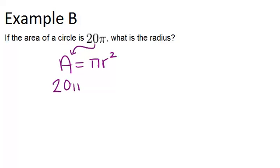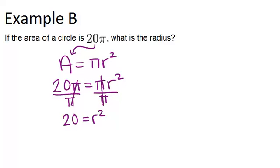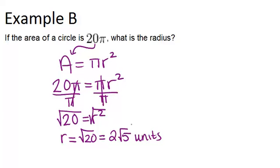So 20 pi equals pi r squared. We can solve this for r by dividing both sides by pi, and then getting 20 equals r squared. So if we take the square root of each side, r equals the square root of 20, which is 2 root 5. And I'll just put units since they didn't give any specific units in the problem.